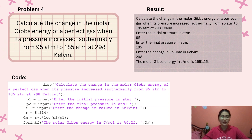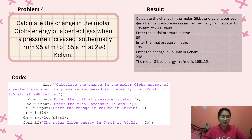For the last problem: calculate the change in the molar Gibbs energy of a perfect gas when its pressure is increased isothermally from 95 atm to 185 atm at 298 Kelvin. You enter the initial pressure, 95 atm; the final pressure, 185 atm; and the temperature, 298 Kelvin. The molar Gibbs energy in joules per mol is 1651.25.